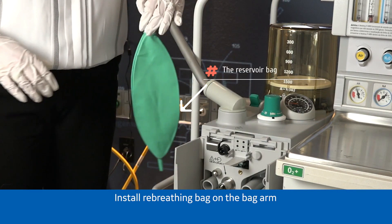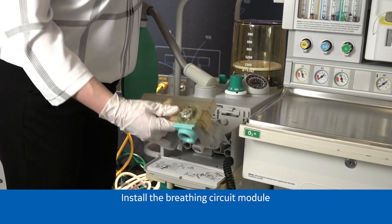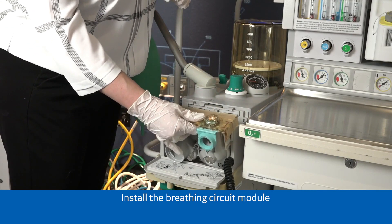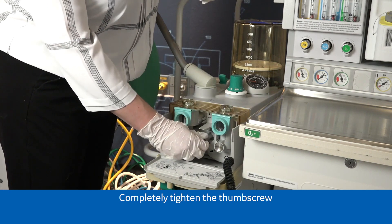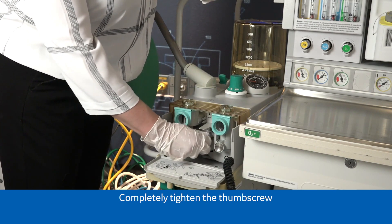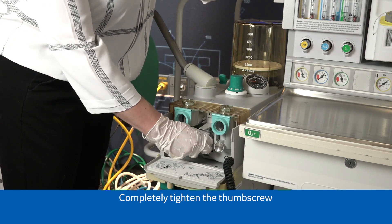In addition, it allows the anesthetist to monitor the breathing pattern of a spontaneously breathing patient. These are usually plastic or rubber, and can come in sizes between 0.5 liters to 6 liters. However, the most common size in the adult system is 2 liters.